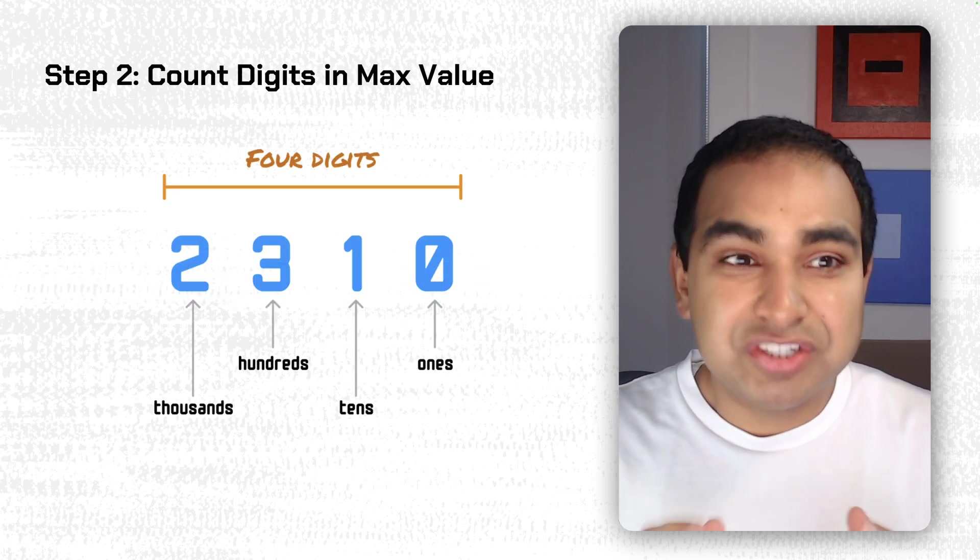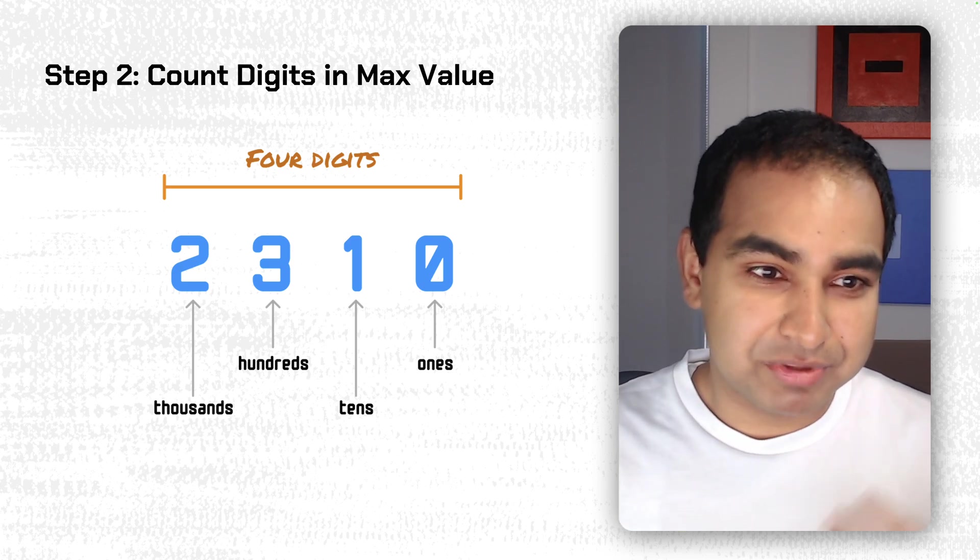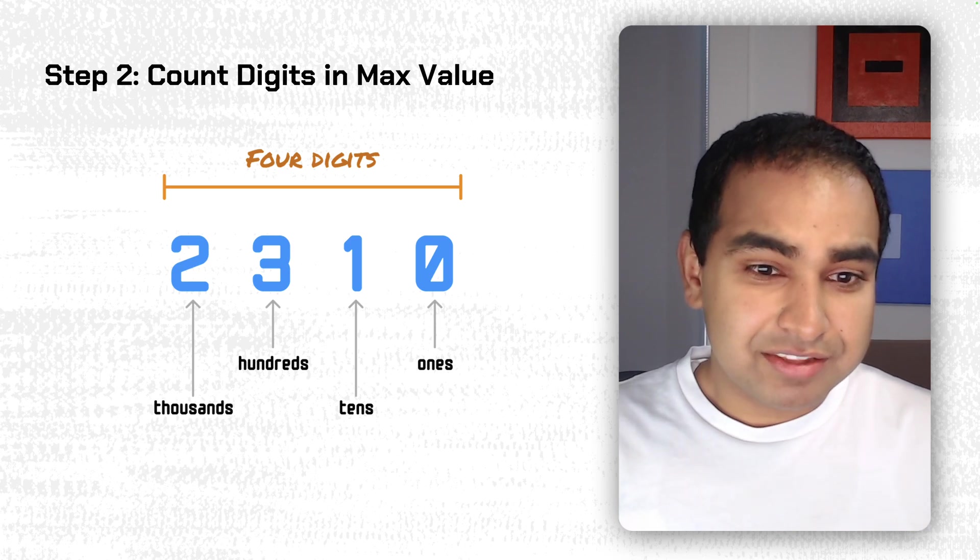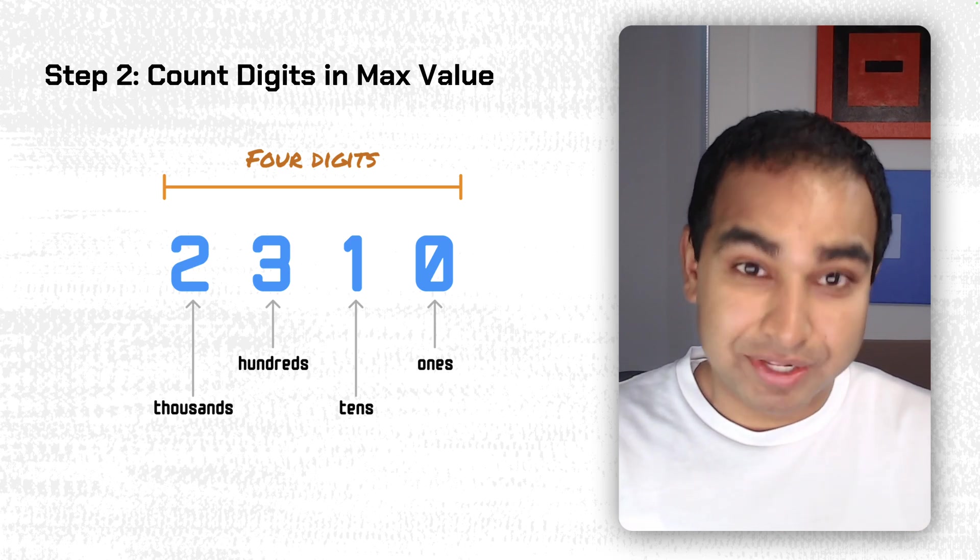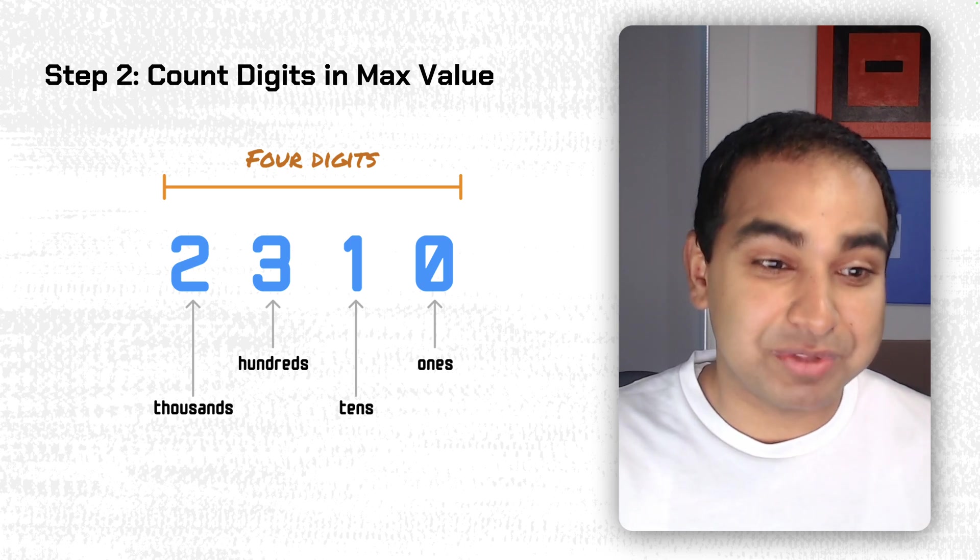now that we find our maximum value, is we count the number of digits in this. So, what we're dealing with right now are base 10 numbers, numbers that go from 0 to 9, and if you use that particular model, the least significant digit is going to be the 1st digit on the rightmost side. Then it's the 10s digit, the 100s digit, and the 1,000s digit,